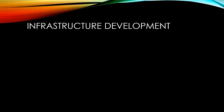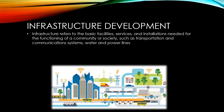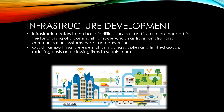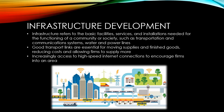Infrastructure is all the basic facilities, services and installations needed for the functioning of a community — things like transportation and communication systems, water and power lines. Good transport links are essential for moving supplies and finished goods, reducing costs for firms and allowing them to supply more at each price. Increasingly, access to high speed internet connections is important to encourage firms into a particular area.